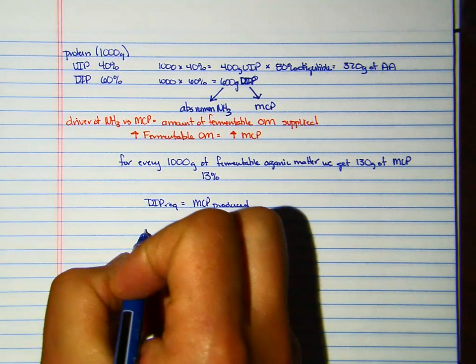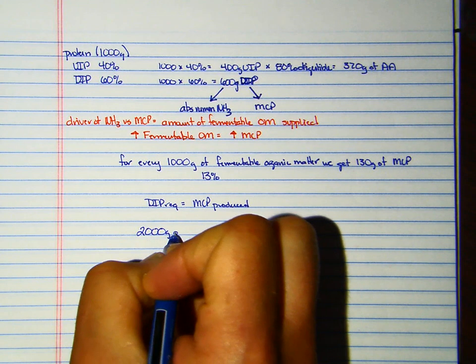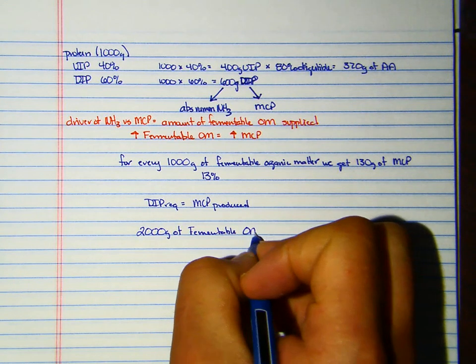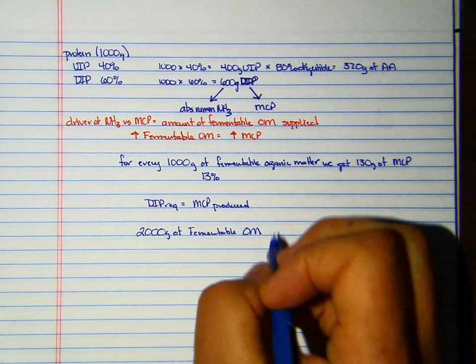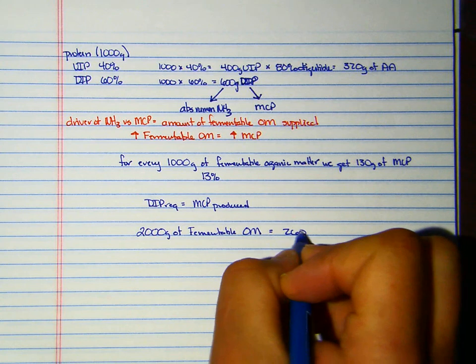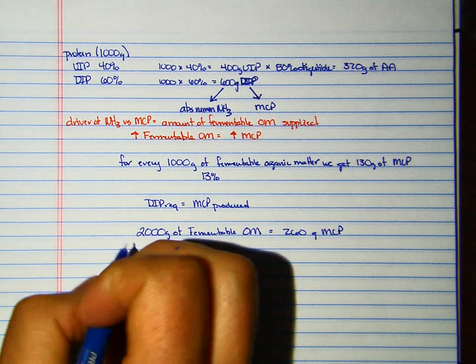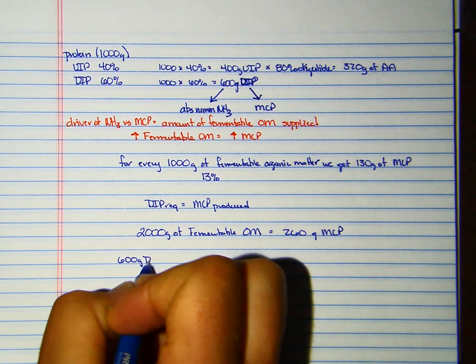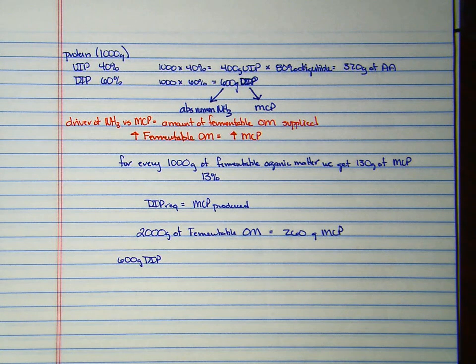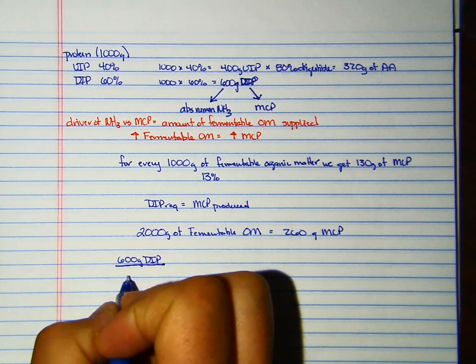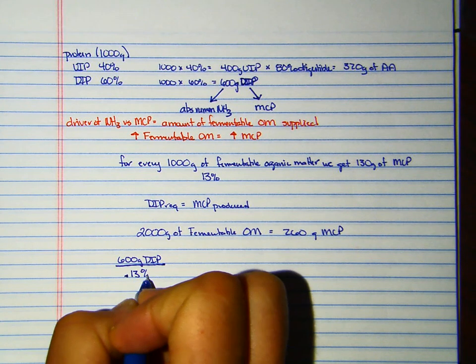So if I fed 2000 grams of fermentable organic matter, I would expect to produce 260 grams of MCP. What we have is 600 grams of DIP, and what I want to basically know is how many grams of fermentable organic matter I could utilize. So I could take this 600 grams and divide it by 13% or 0.13.